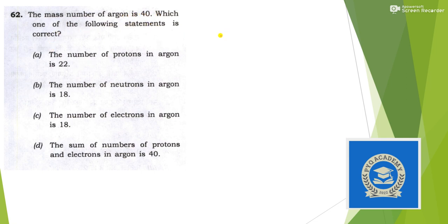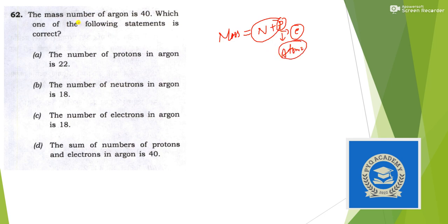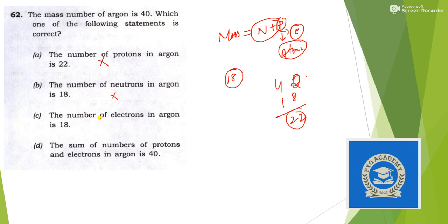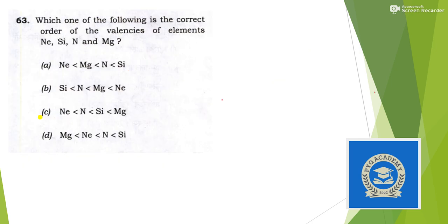Next: the mass number of argon is 40 — which statement is correct? Mass number = neutrons + protons. Atomic number of argon = 18 (number of protons). So number of neutrons = 40 − 18 = 22. Number of protons = 18 (not 22), so that option is wrong. Number of neutrons = 22, not 18. Number of electrons = 18, which equals the number of protons. Answer is option C.